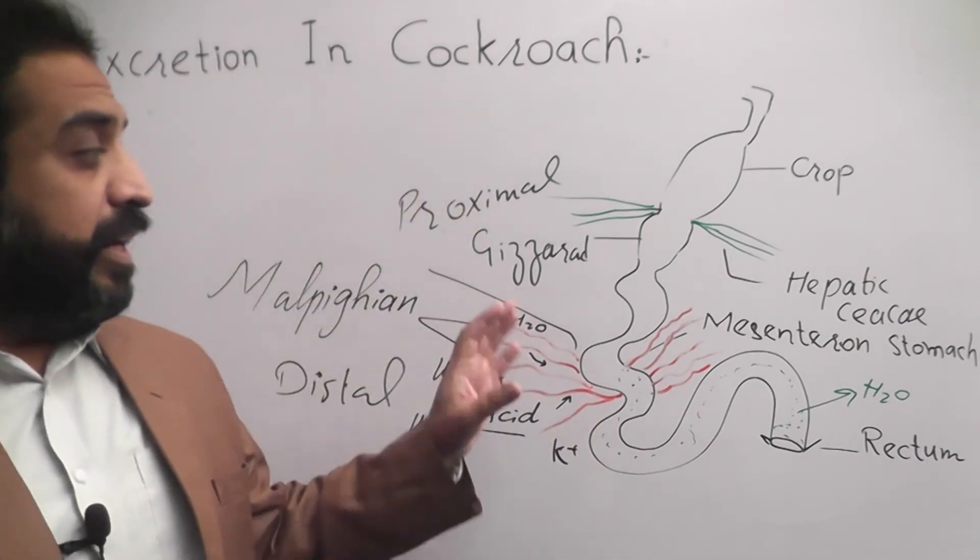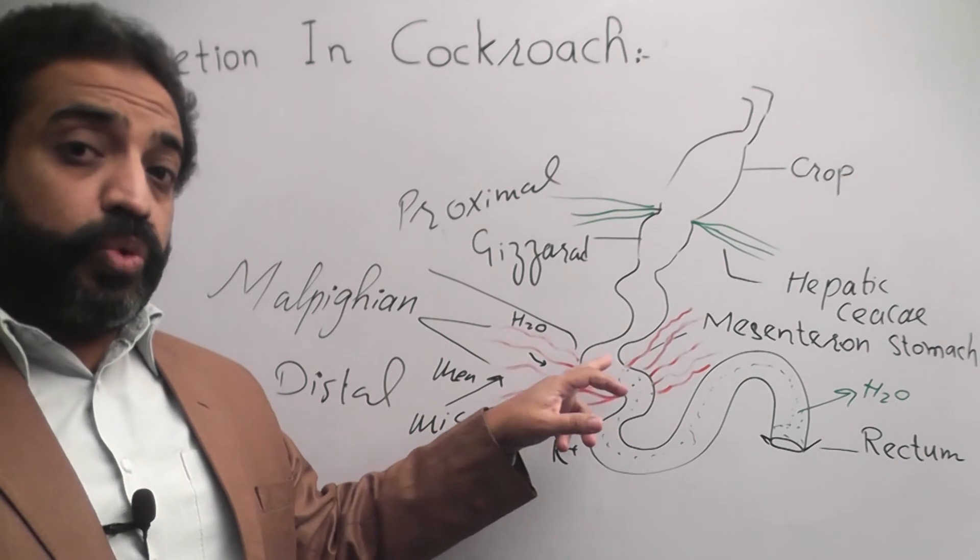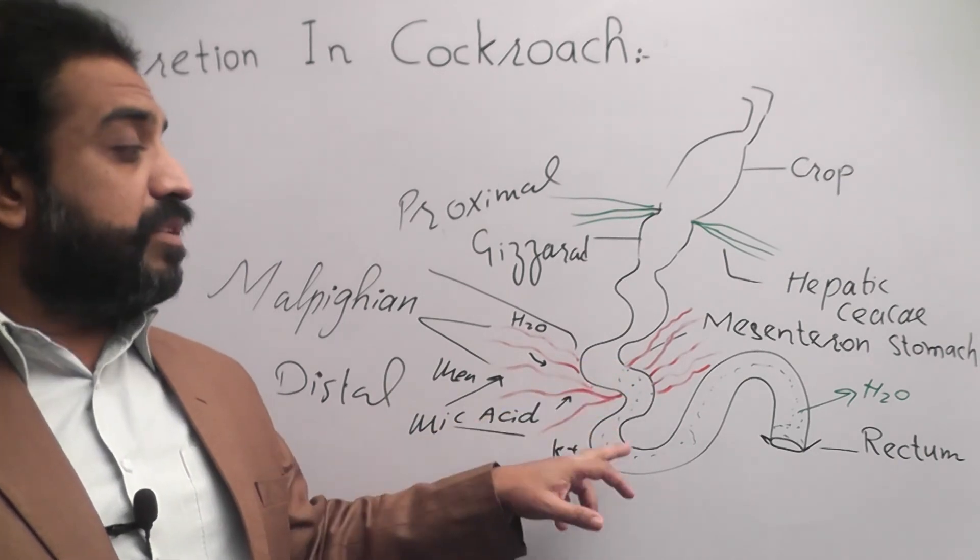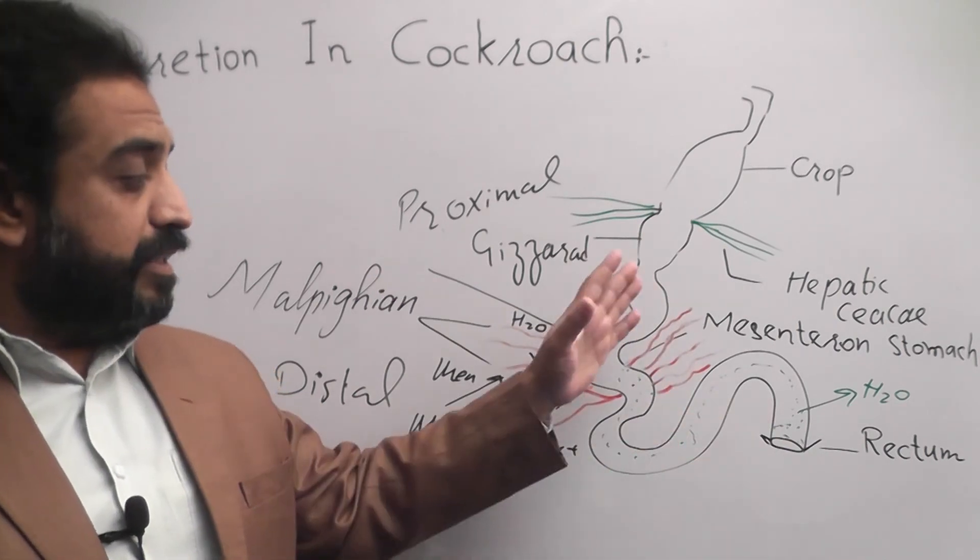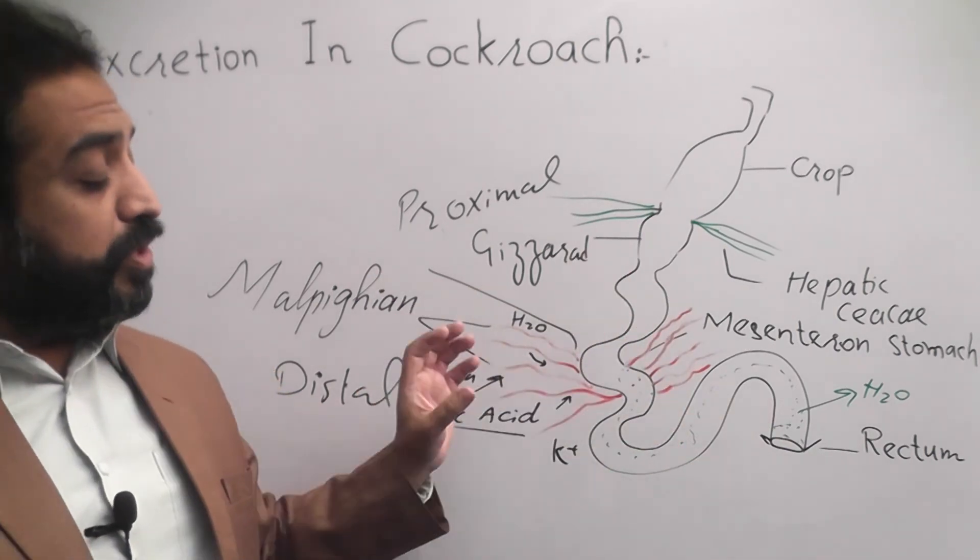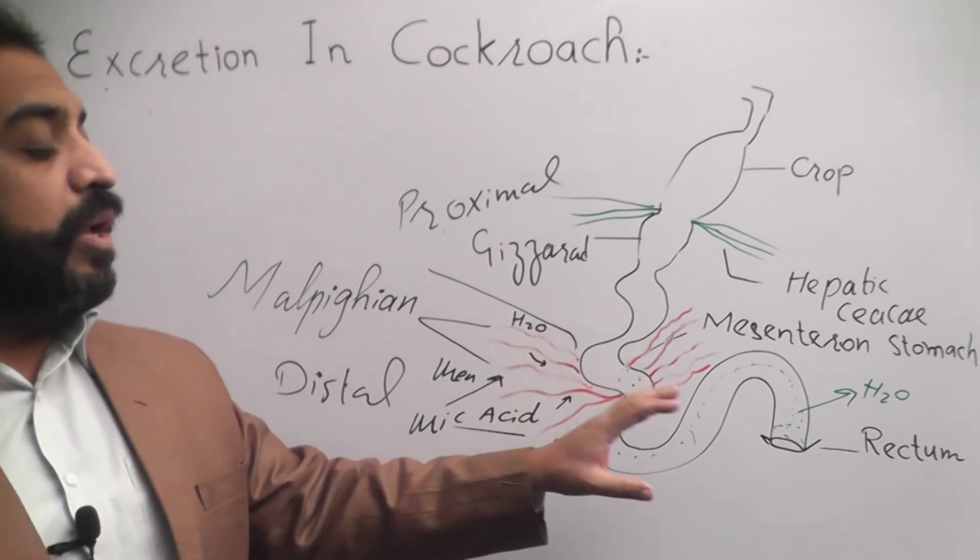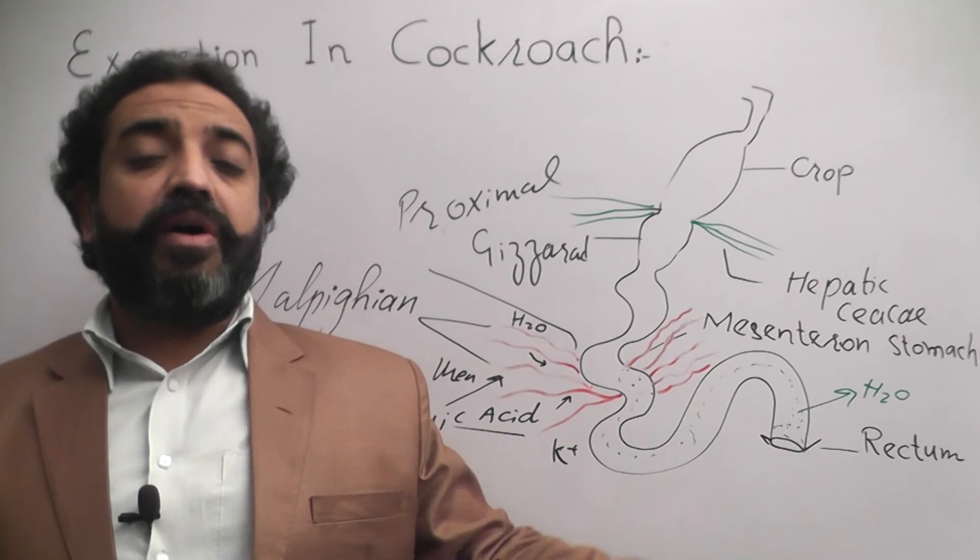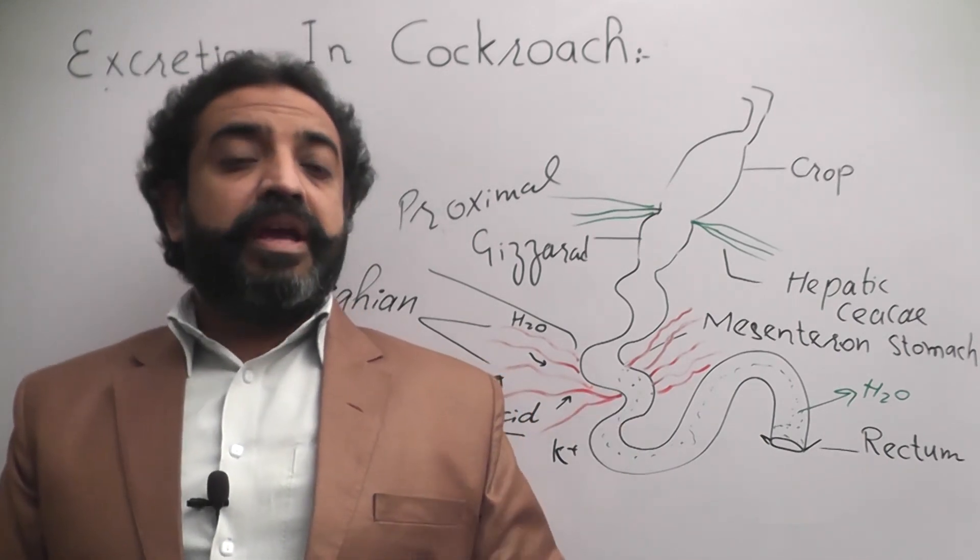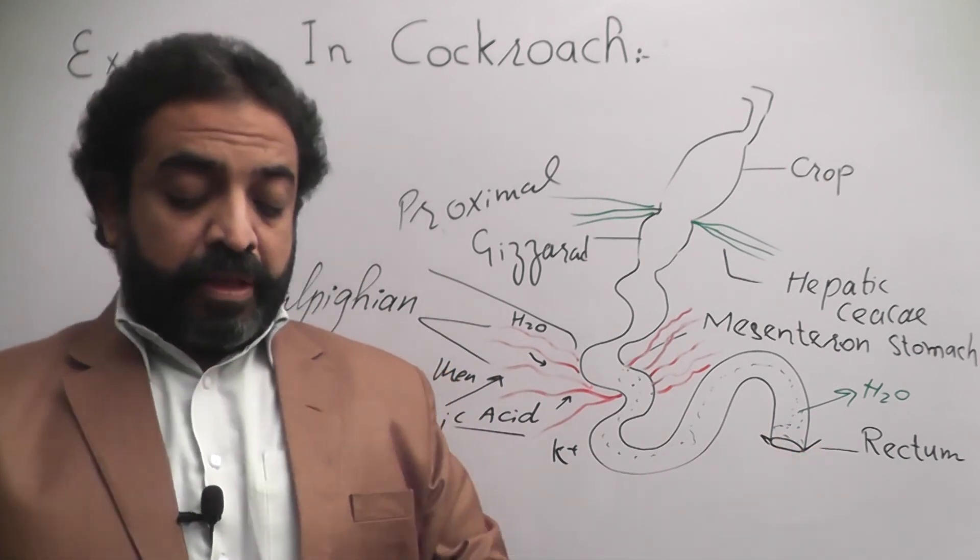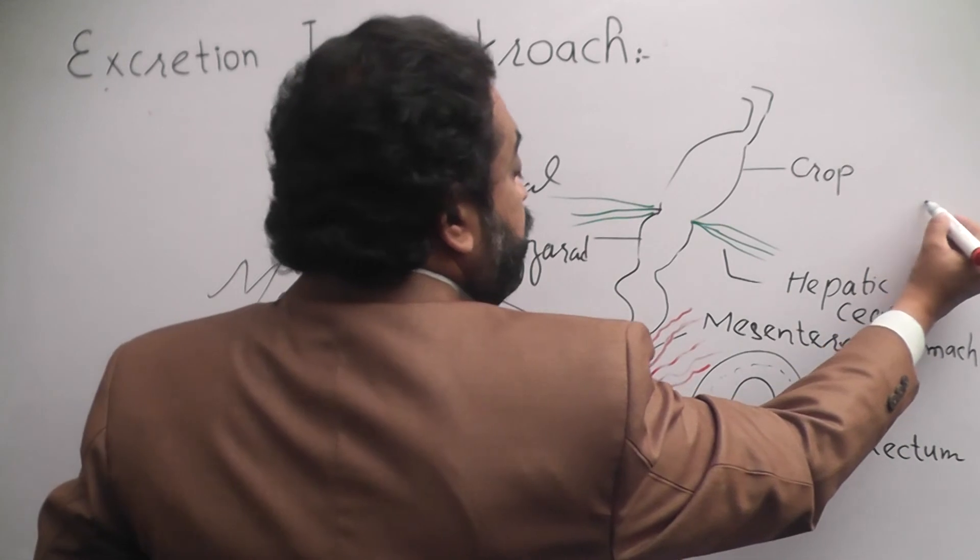So it is a unique excretory system with physical connection to the digestive tract. Malpighian tubules are blind alleys and nitrogenous waste with water enters them. Rectum is the site from where water and other important nutrients are reabsorbed and uric acid is expelled from the body as solid excreta. This is the way.